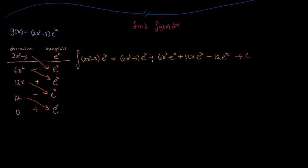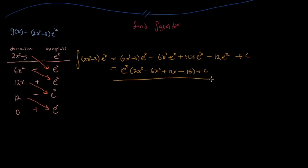If we wanted to make this look even nicer, we can simplify by factoring out e to the x. Opening up the bracket and collecting terms, we would get e to the x times (2x³ − 6x² + 12x − 15) plus C. And this right here is our answer.